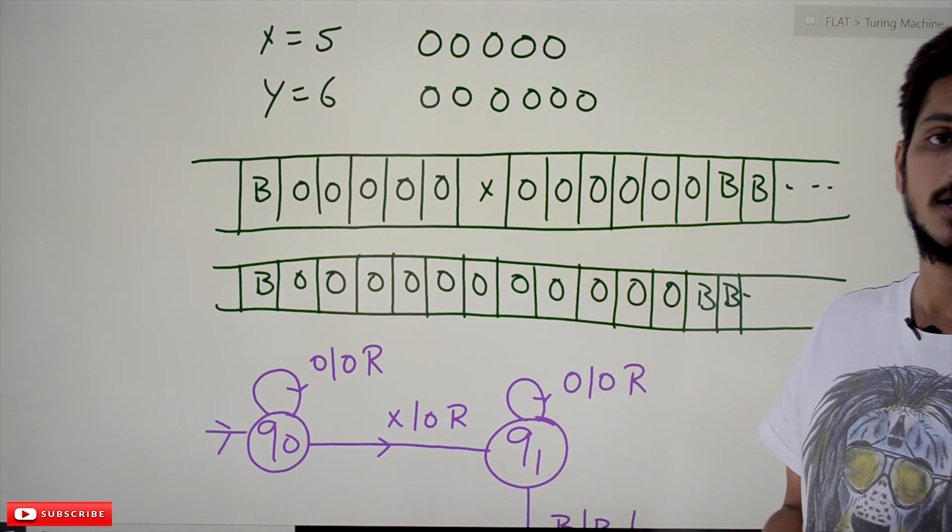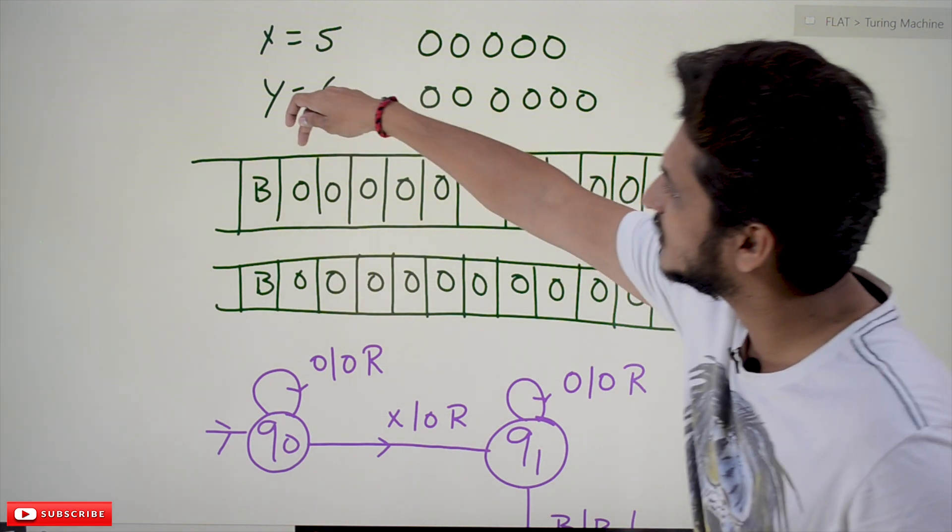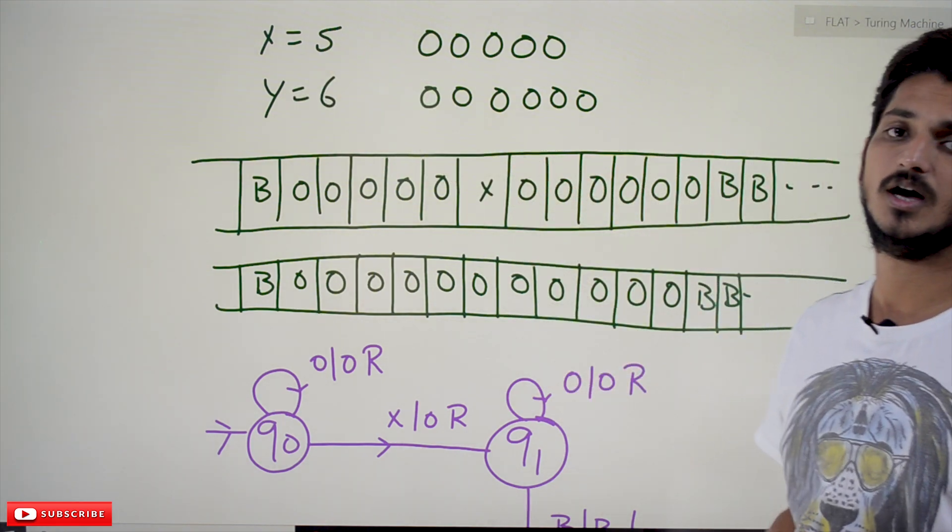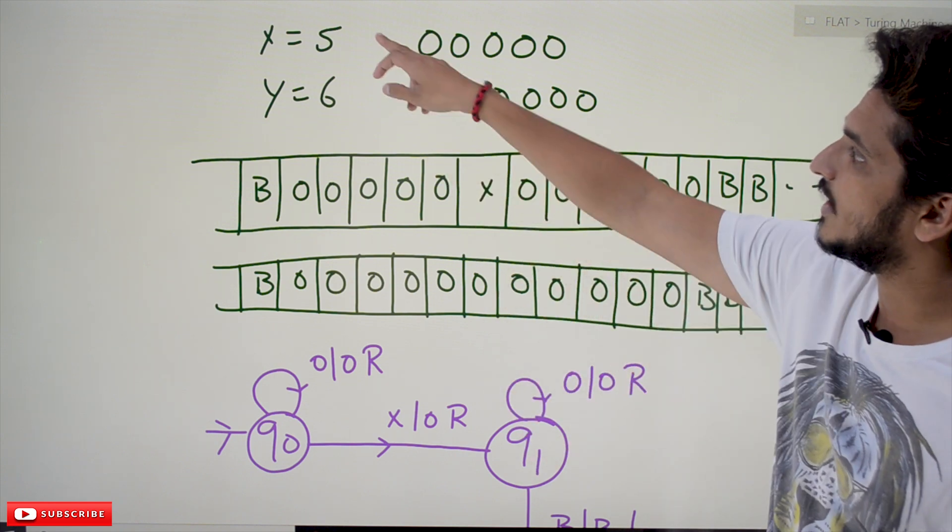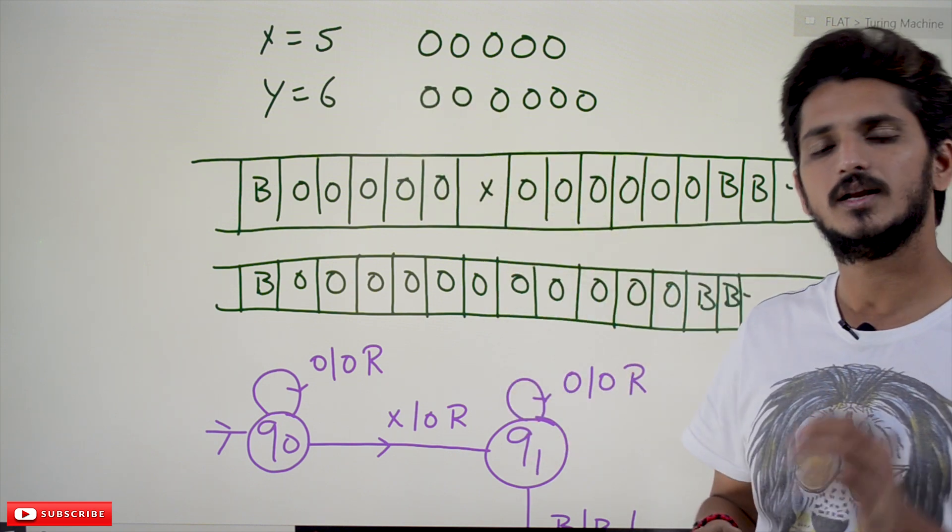Our Turing machine starts here, from the starting of the input. So when you add 5 plus 6, what's the number you will get? 11.